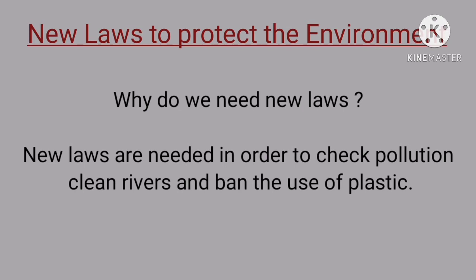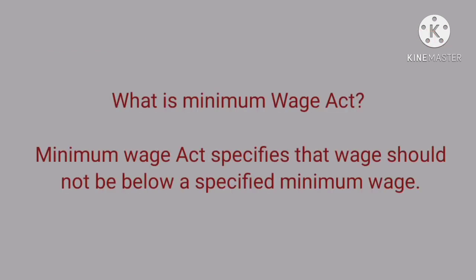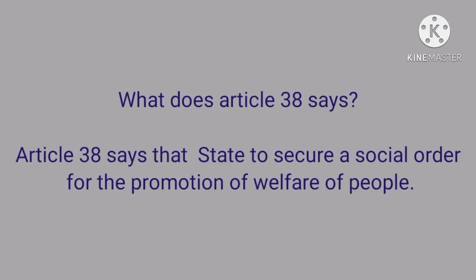Dear children, in this chapter we studied about the Minimum Wages Act, the Child Labour Prohibition Act, and the act related to safety measures. The Minimum Wages Act specifies that wages should not be below a specified minimum. Article 38 says that the state shall secure social order for the promotion of welfare of the people.